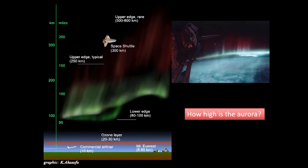How high is the aurora? Here's a quick schematic. A commercial airliner flies at 10 kilometers. The lower edge of these arcs is about 80 to 100 kilometers. These red emissions that generally you won't see with the naked eye may be 150 to 200 kilometers in altitude and higher. The bright emissions are in the 80 to 100 kilometer range.